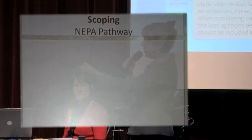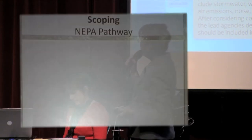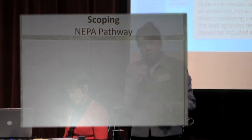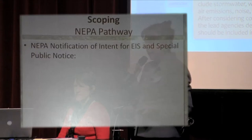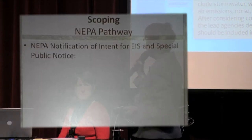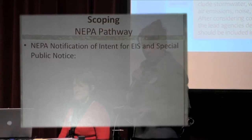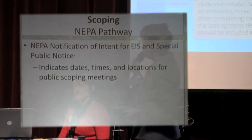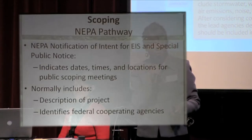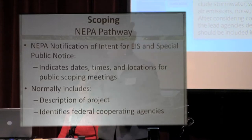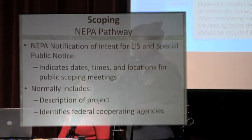For NEPA, the U.S. Army Corps of Engineers' document has a slightly different name: it is a notification of intent for EIS to start, and what they call a special public notice. Same thing — telling you dates, times, and locations. It normally includes a description of the project and will also identify what federal cooperating agencies will work with them to provide their expertise and input.